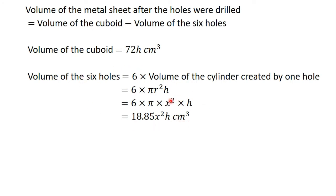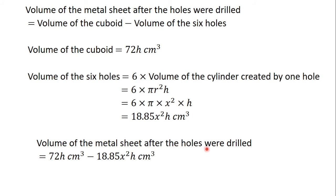The volume of the metal sheet after the holes were drilled equals the volume of the cuboid, 72h cm³, minus the volume of the six holes, 18.85x²h cm³. Factorizing out h, this gives us (72 − 18.85x²)h centimeters cubed. That is the expression for the volume of the metal sheet after the holes were drilled.